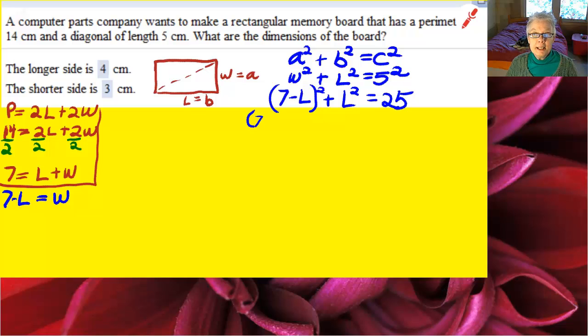Now just to be safe, I'll write 7 minus L squared as 7 minus L times 7 minus L just to make sure I don't make mistakes. That will give me 49 minus 7L minus 7L which is minus 14L plus L squared and then plus the L squared that was already there equals 25.